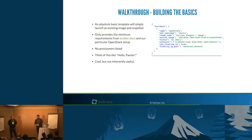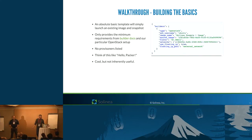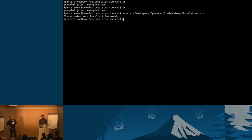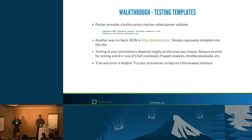I'm going to show you two examples. The first one is super simple — just a builder, no provisioners. It's going to launch an instance, give it an image name, take a snapshot, and tear down. I'll kick this off — first sourcing my Keystone file — and let it run in the background while we talk about testing. This one's really quick since there are no provisioners.